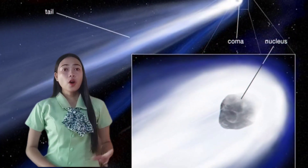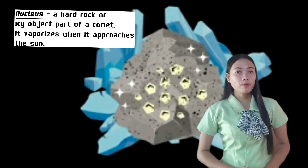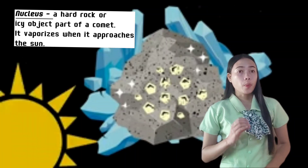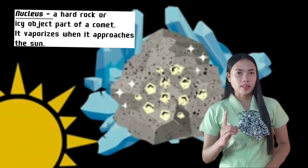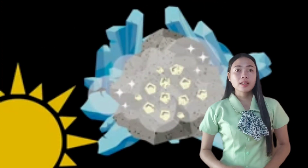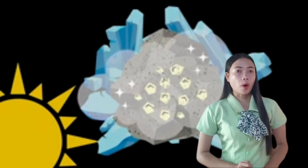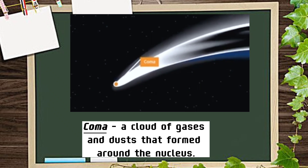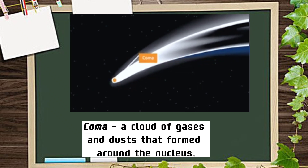The nucleus is the hard rocky or icy object part of the comet. It vaporizes or breaks down when it approaches the Sun, and in the process a cloud of gases and dust will form around the nucleus, creating the coma. The coma is a cloud of gases and dust that forms around the nucleus.